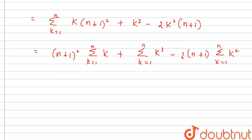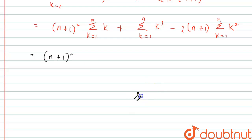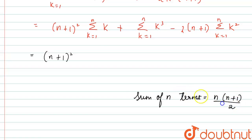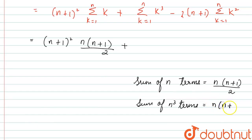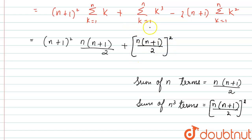Splitting: (n+1)²·Σk + Σk³ - 2(n+1)·Σk². Applying the formula Σk = n(n+1)/2, we get (n+1)²·[n(n+1)/2]. For Σk³, the formula is [n(n+1)/2]², so we add [n(n+1)/2]². For Σk², the formula is n(n+1)(2n+1)/6, so we subtract 2(n+1)·[n(n+1)(2n+1)/6].